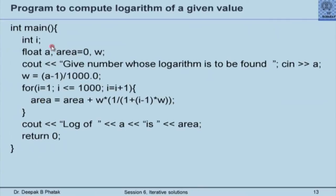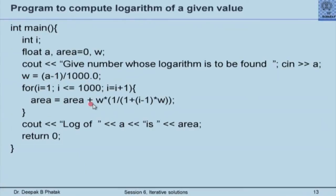Let us quickly go through this program. I define integer variable i as an index, and the value of a as a floating point variable — it is essential that a be floating point because the value of logarithm could be that of any positive number. We define and initialize area to 0 and define w. Next, we prompt the user to give a number whose logarithm is to be found and input the value of a. Then we calculate the value of w.